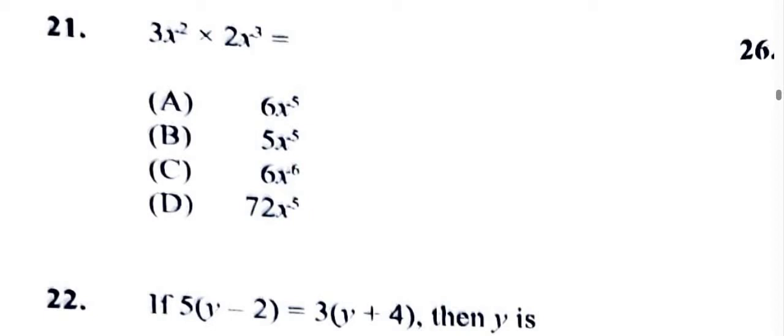Okay, so we have 3x squared times 2x cubed. We're going to multiply the 3 by the 2, which gives us 6. So we know these guys are out, and we're going to keep the base which is x since they have the same base of x.